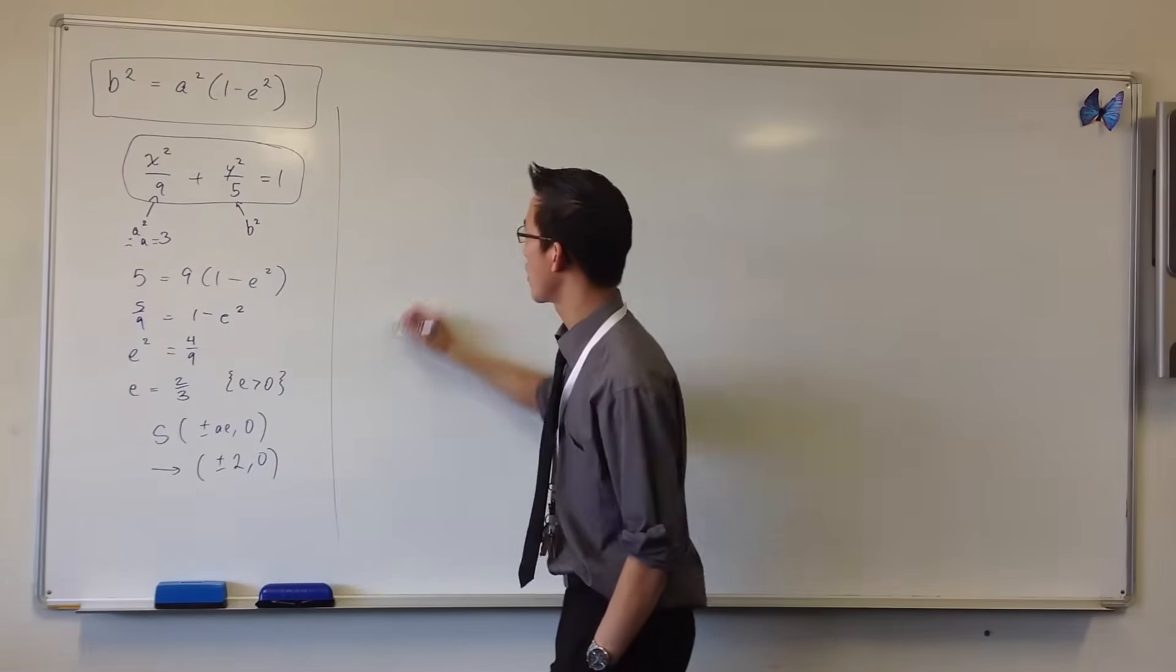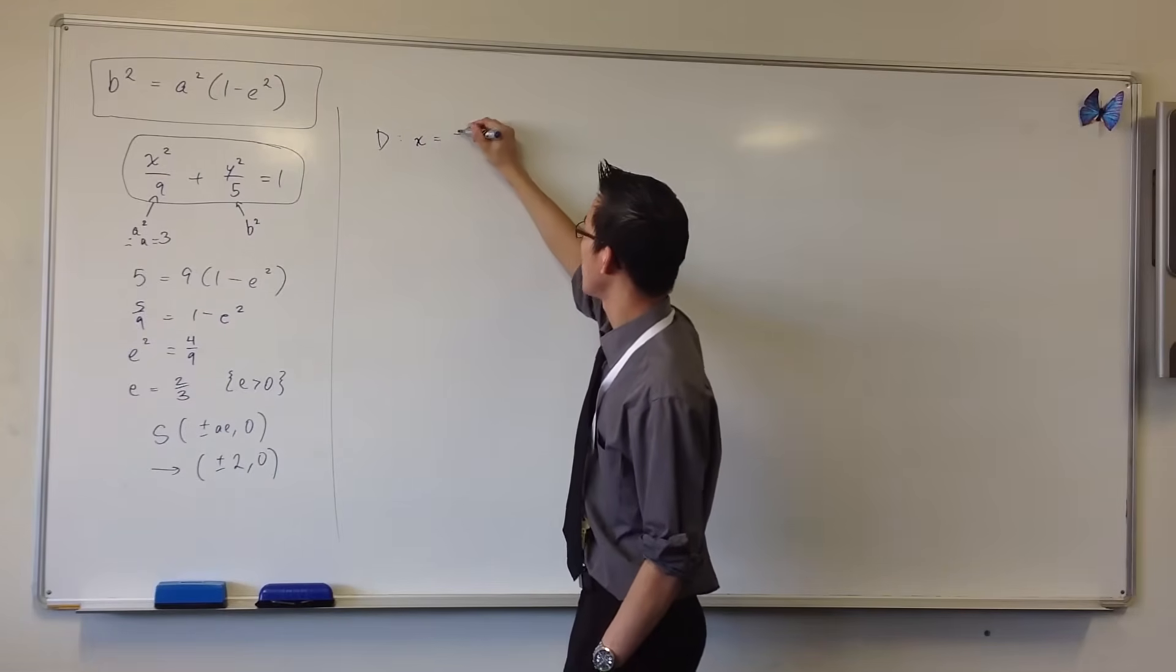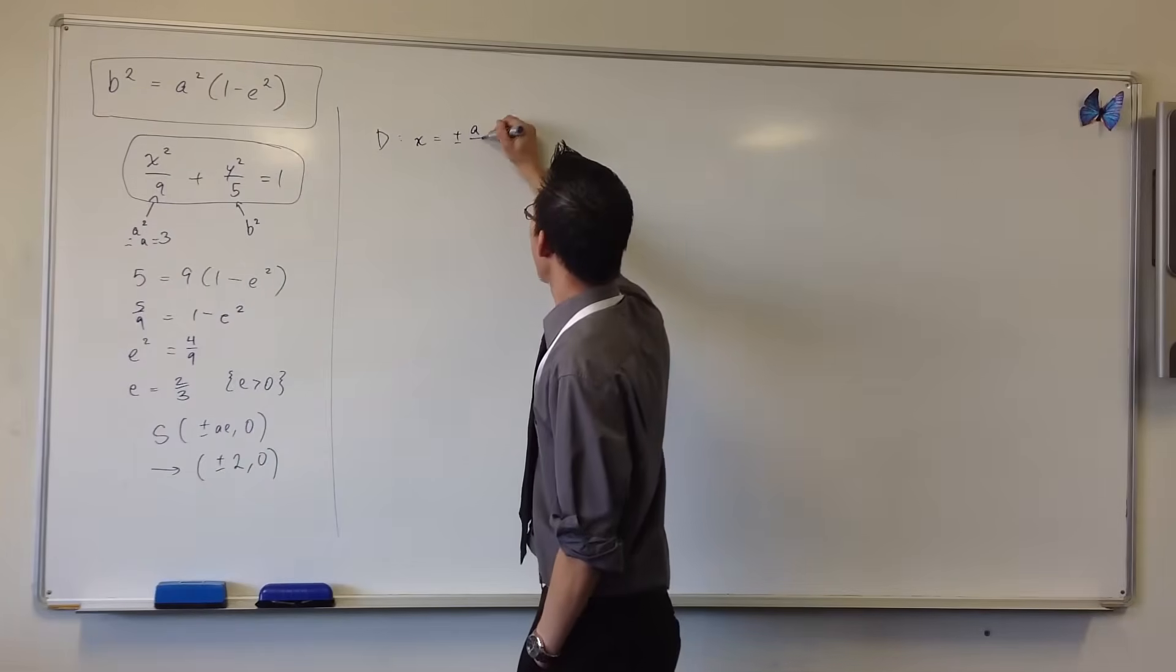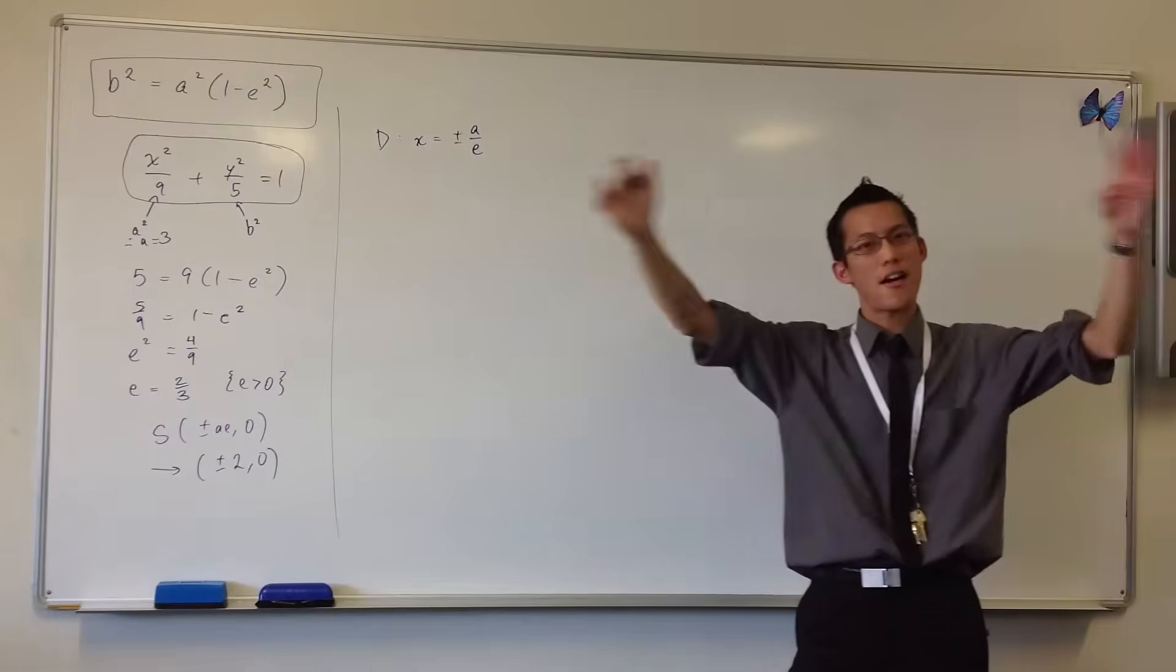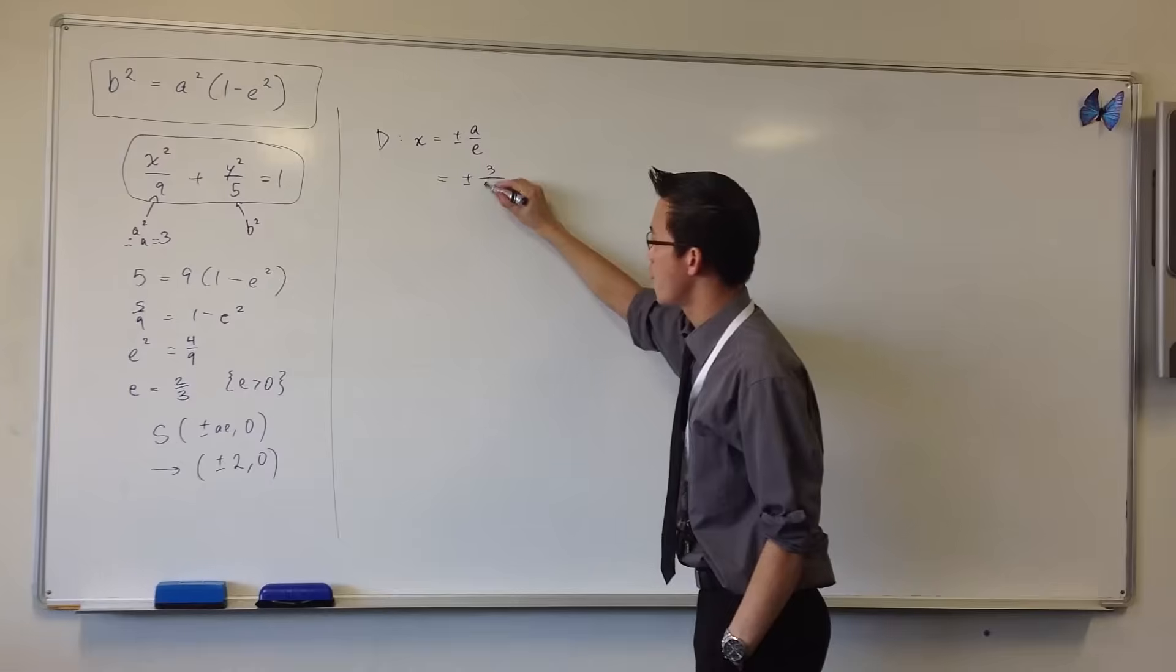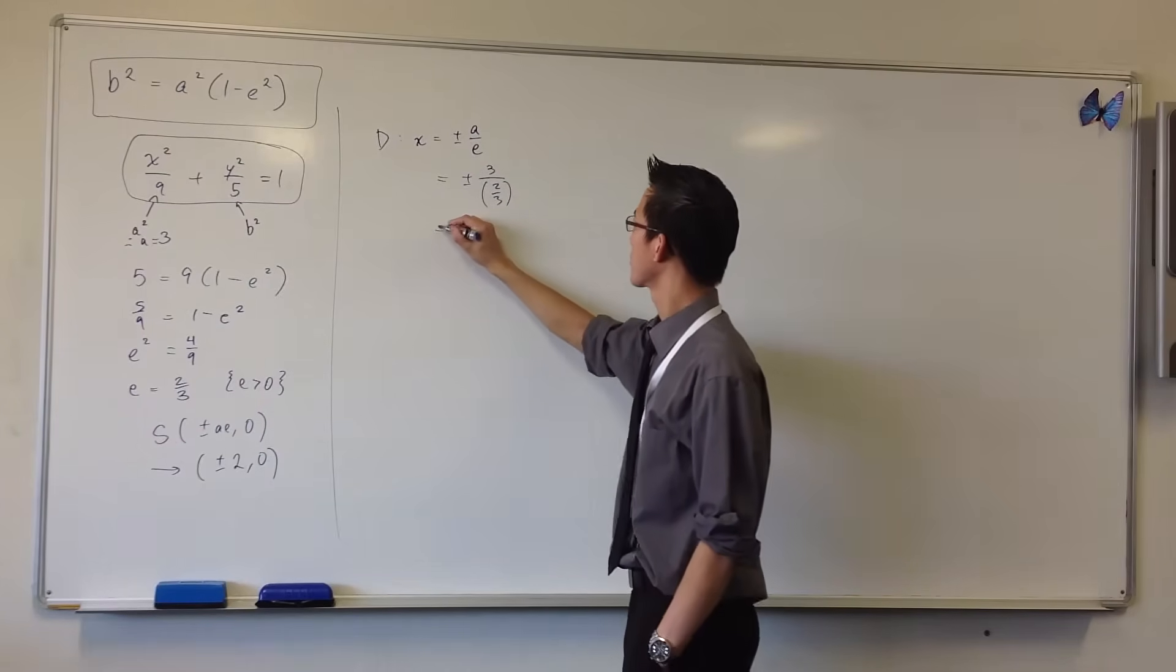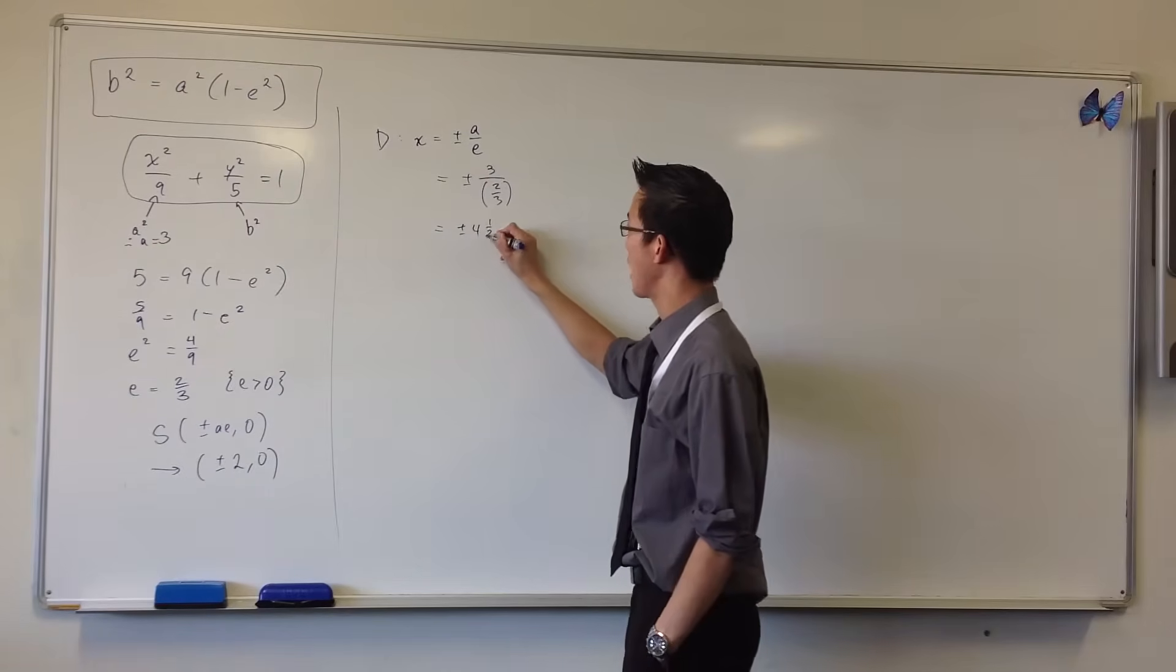Exactly the same way I can work out where the directrices are. They're going to be x equals plus or minus a over e, and that'll tell you where, how far across you are. So what we got here, plus or minus three over two-thirds, which gives you nine over two, which is four and a half.